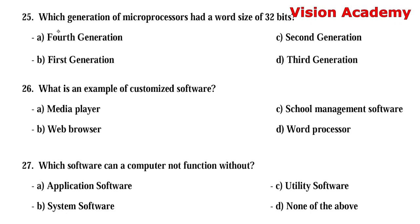Question number 25: Which generation of microprocessors had a word size of 32 bits? Option A: fourth generation. Option B: first generation. Option C: second generation. Option D: third generation. The right answer is Option A, fourth generation.